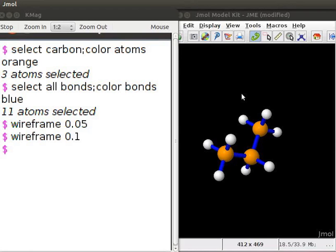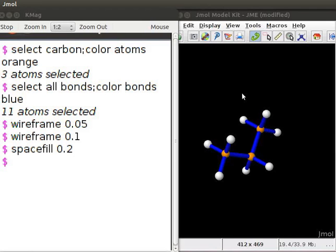To change the size of the atoms, we will use the command spacefill followed by a decimal number. At the dollar prompt, type spacefill 0.2. The decimal number represents the radius of the atom in angstroms. Press Enter. Observe the size of the atoms in the propane molecule decrease in size.